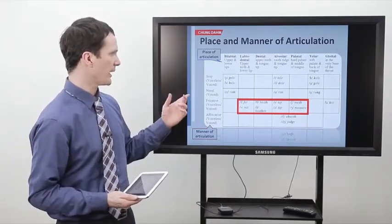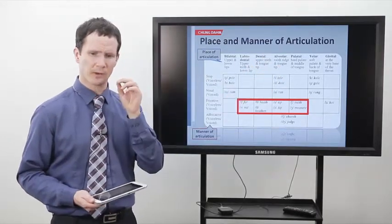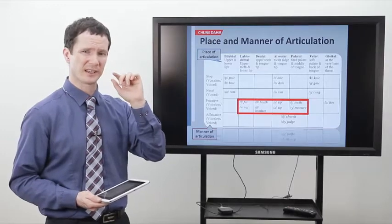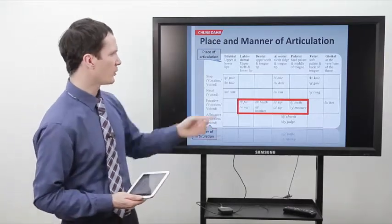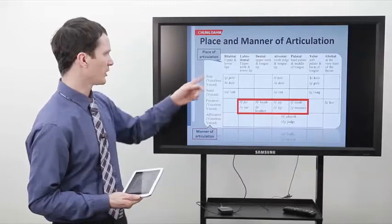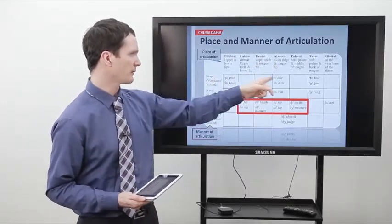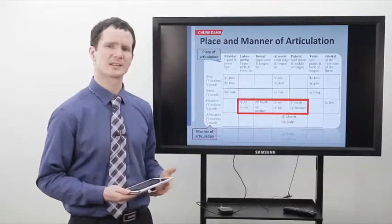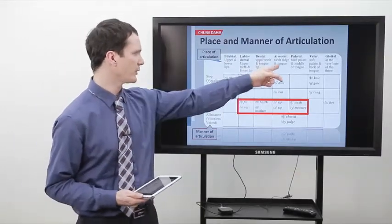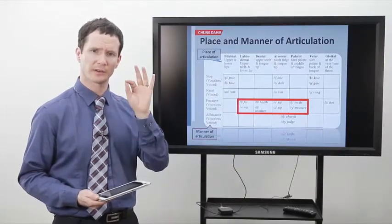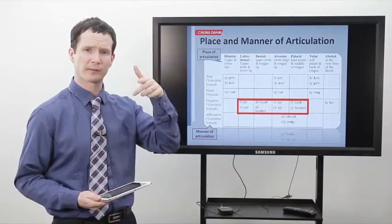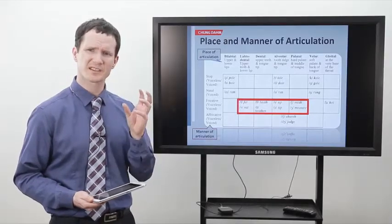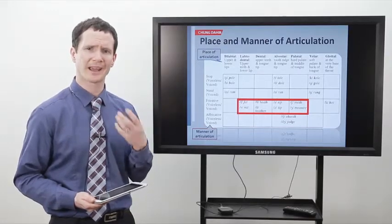The next group of sounds is the alveolar — where the tip of the tongue touches just above the back of the teeth. We start with the T sound, which is voiceless, and the voiced version is D. So it's an alveolar stop: voiceless is T, voiced is D. An alveolar nasal: we take the tip of our tongue, put it to the alveolar ridge, and let the air come out of our nose — in this case, N. I encourage you to make these sounds along with me to get a sense of what the various parts of your mouth are doing.